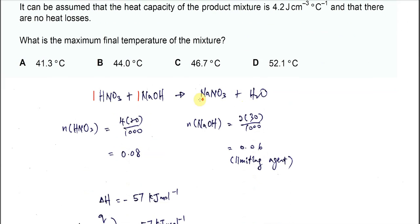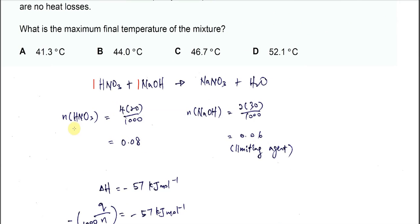Okay, so after you calculate using the volume and concentration, the moles of the acid is 0.08 and the mole of the sodium hydroxide is 0.06. So 0.08 is in excess, 0.06 is the limiting agent. So we're going to use the mole of sodium hydroxide for the calculations later.